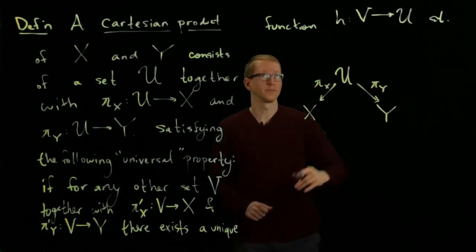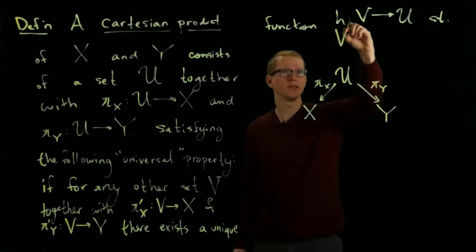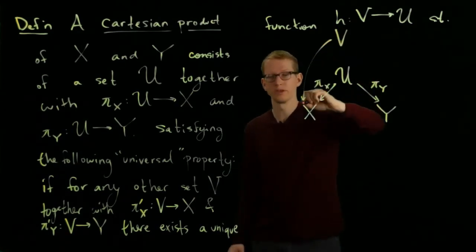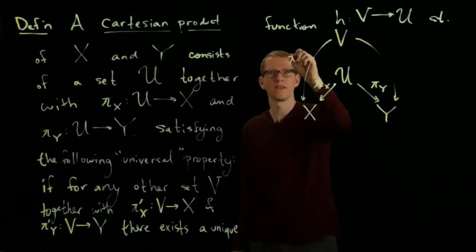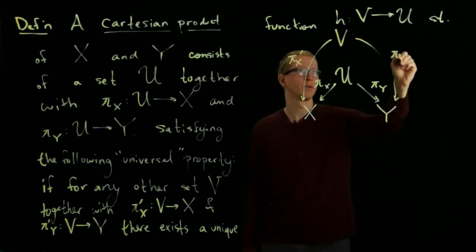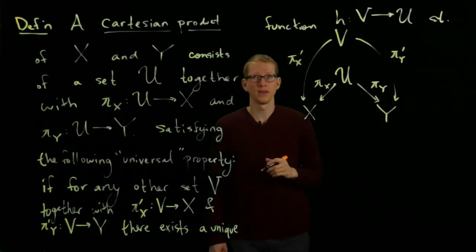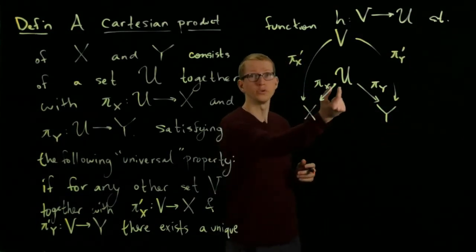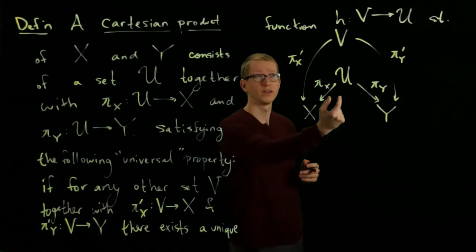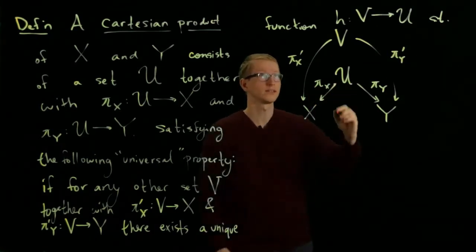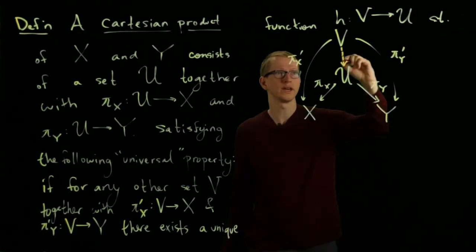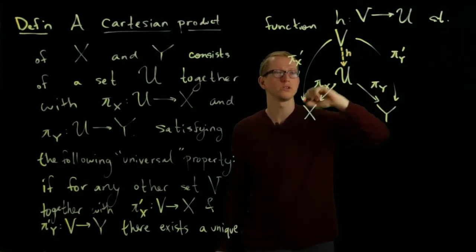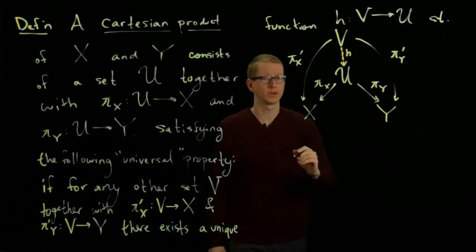We also have V, and V comes equipped with maps to X and Y as well: π'X and π'Y. U is a Cartesian product if for any such diagram like this there exists a unique map, which we often denote with a dashed arrow H, such that this diagram commutes.